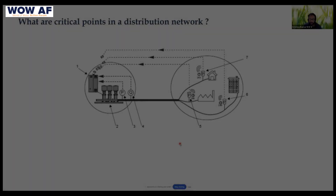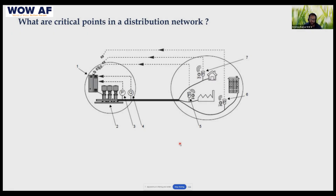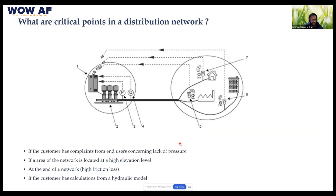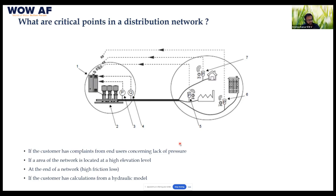What are these critical points? You may have a question: how will I identify my critical points in the system? There are four criteria — I'm not restricting it to these four, but predominantly in the network when using software like WaterGEMS and EPANET, they use these criteria for identifying critical points.